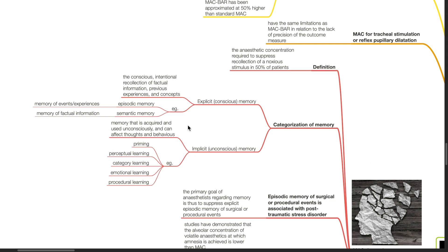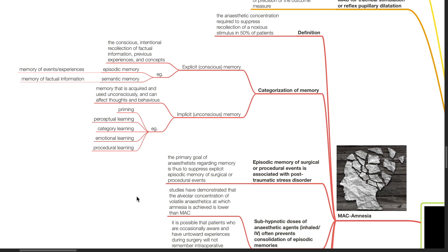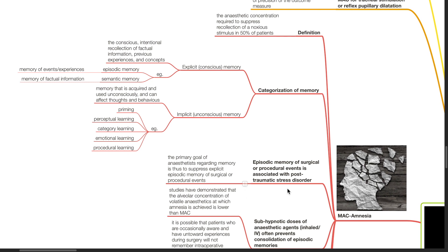Implicit memory is memory that is acquired and used unconsciously, and can affect thoughts and behaviors, such as priming, perceptual learning, category learning, emotional learning, and procedural learning.